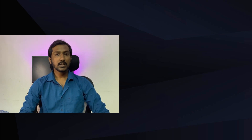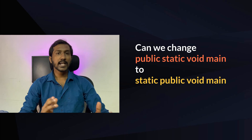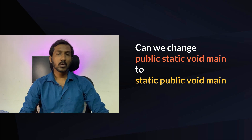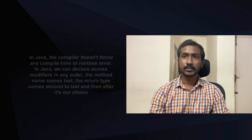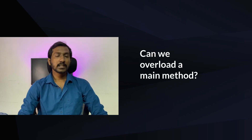We have a main method declared as 'public static void main'. If I change it to 'static public void main', what happens? We can change the order of modifiers — it doesn't cause any issue. And yes, we can also overload the main method.